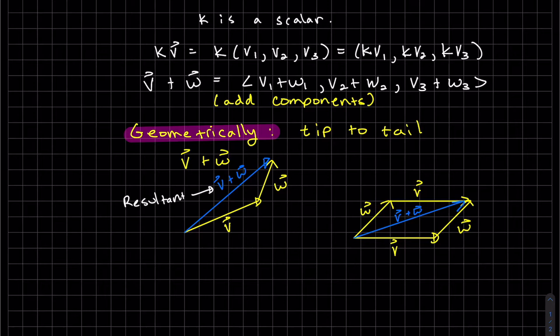So we can add them tip to tail. The tip is the head, and there's the tail. And then the resultant starts at the tail and goes to the tip.